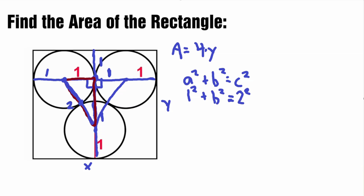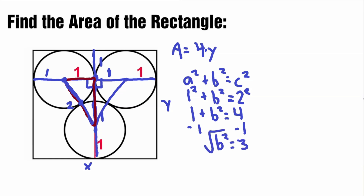With our c value equal to 2, we can solve for b to find the height of this right triangle. 1 squared equals 1, plus b squared equals 2 squared, which is 4. Subtract 1 to get b by itself: b squared equals 3. Then we square root both sides. Since we're working with geometry, we can only have a positive value, so b is equal to the square root of 3.